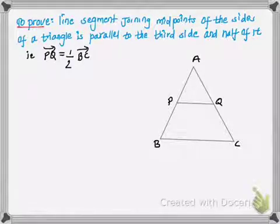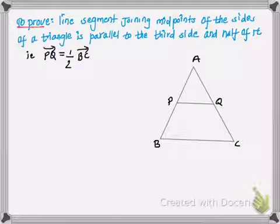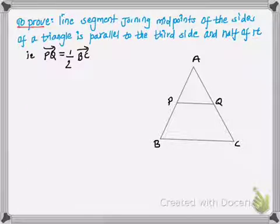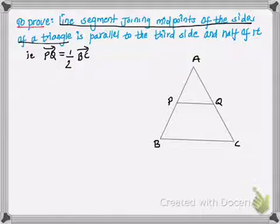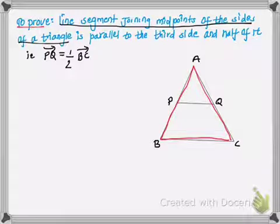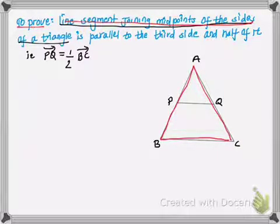Hello and welcome back to my video tutorial on vector geometry. In this tutorial we'll be looking at another proof from vector geometry. In this theorem, what we have to prove is that the line segment joining the midpoints of the sides of a triangle. Here we're given a triangle ABC, and the line segment joining the midpoints — point P and point Q.